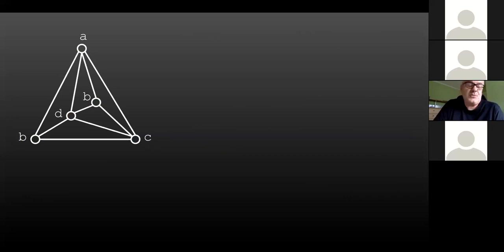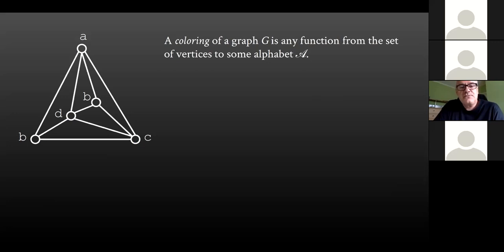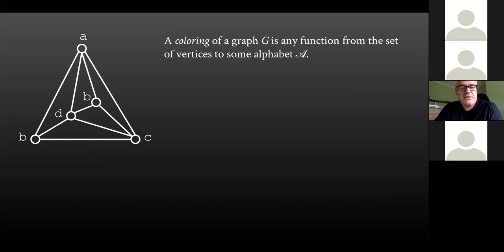I'm at a seminar on combinatorics on words, so I would like to switch more closely to objects that we both like very much, which are words. Indeed, if we have a coloring of a graph where the colors are some abstract elements, these can also be letters of some alphabet. So from now on, the coloring of a graph is any function from the set of vertices to some alphabet A. Colors are now letters.